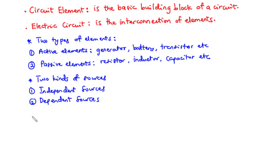Let's look at the independent sources. We define independent sources as an active element that provides a specific voltage or current that is completely independent of other circuit elements. An independent source is a source or active element that will provide a specific voltage or current which does not depend on any other circuit element.